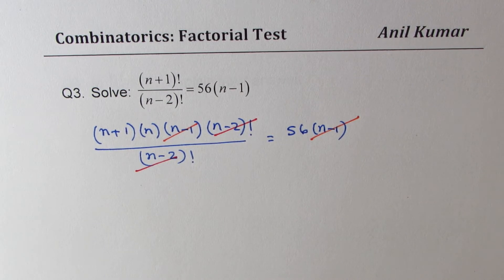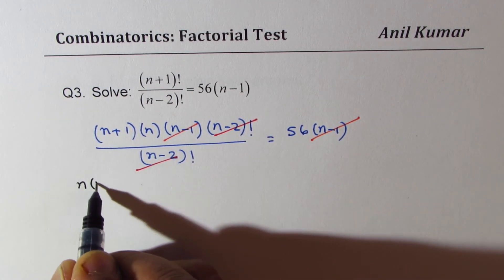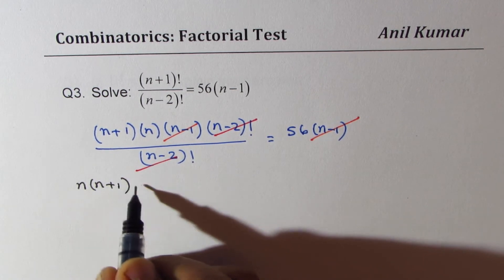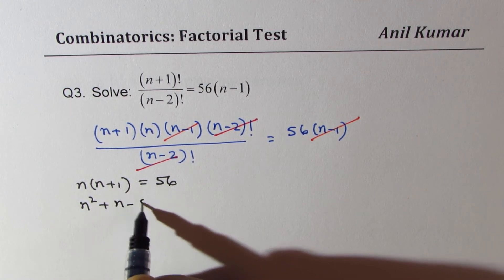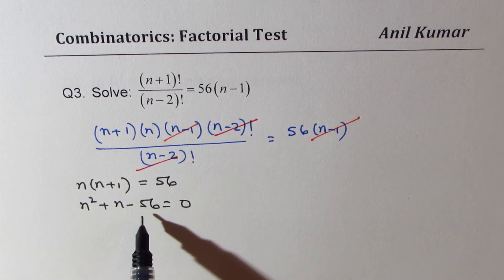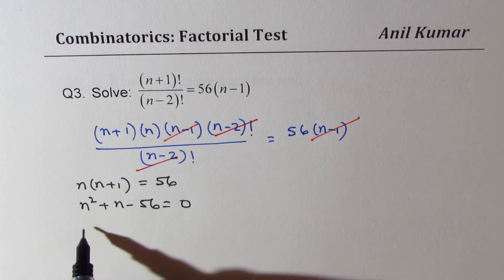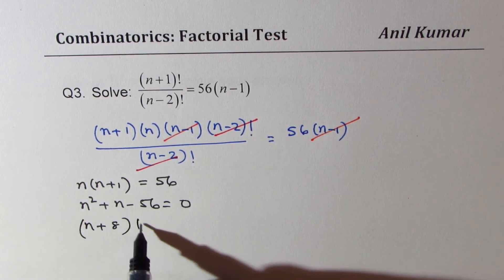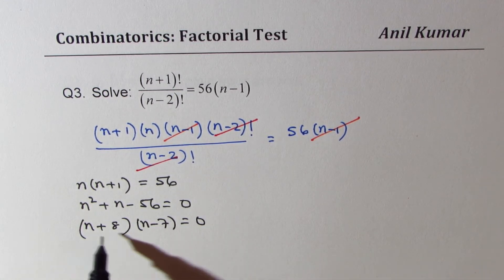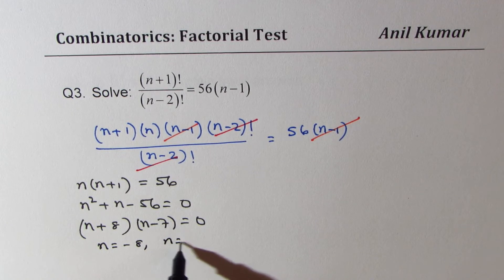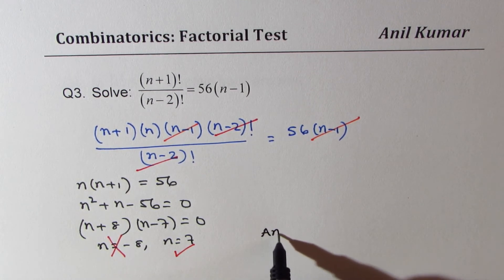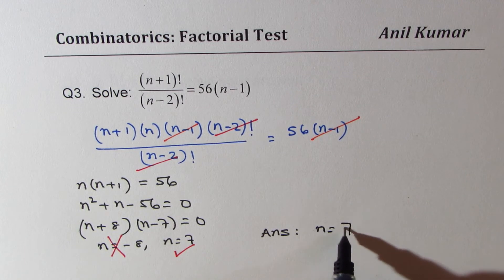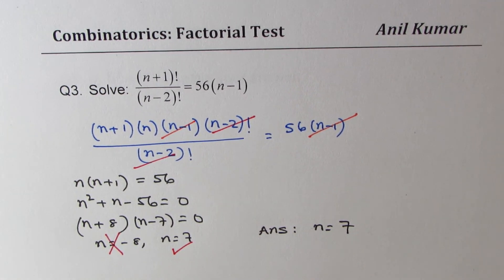What remains is n times n plus 1. So we have n times n plus 1 equals 56. Expanding: n squared plus n minus 56 equals 0. Since 56 is 7 times 8, we factor as n plus 8 times n minus 7 equals 0, giving n equals negative 8 or n equals 7. Negative 8 is not valid, so the answer is n equals 7.